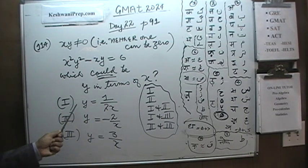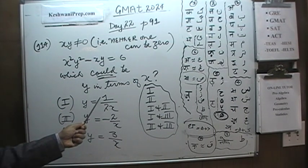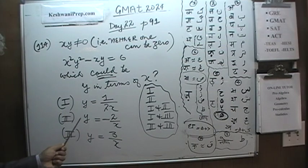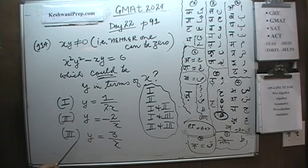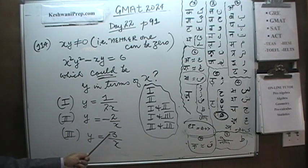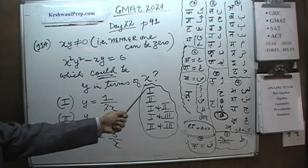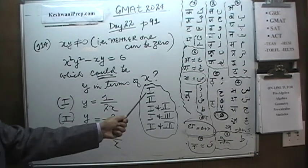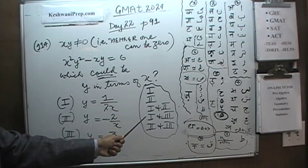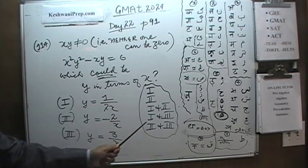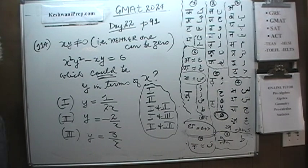Here are the answer choices. The first says y is equal to 1 over 2x. The second says y is equal to negative 2 over x. The third says y is equal to 3 over x. And the answer choices are: 1 only, 2 only, 1 and 2, 1 and 3, or 2 and 3. Pause the video and do it yourself.